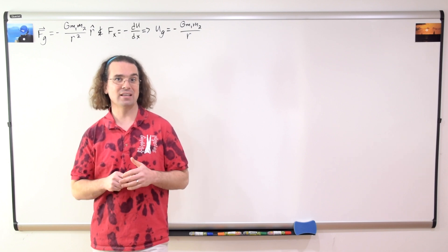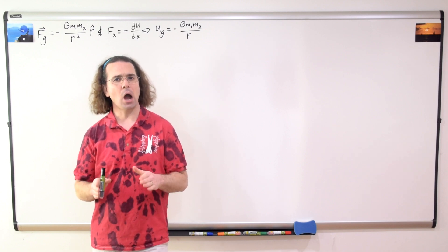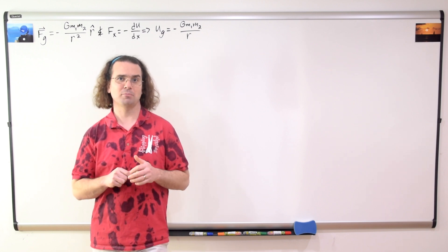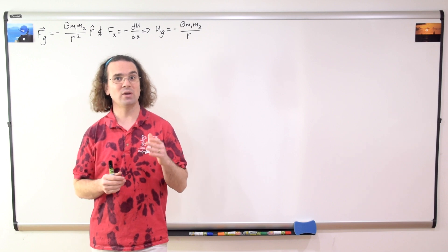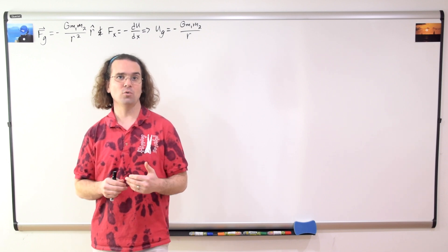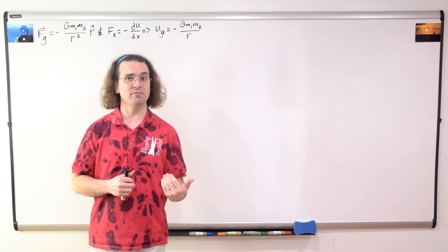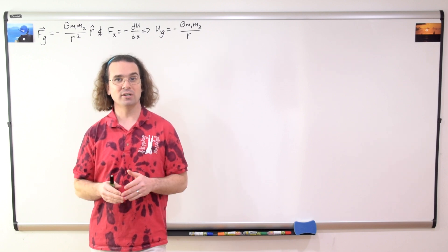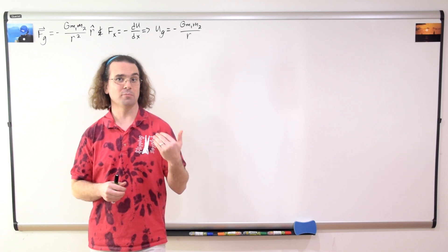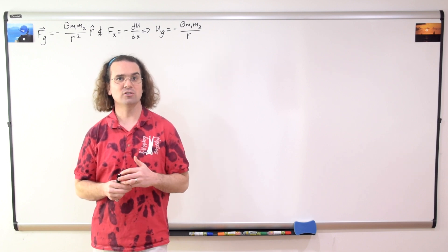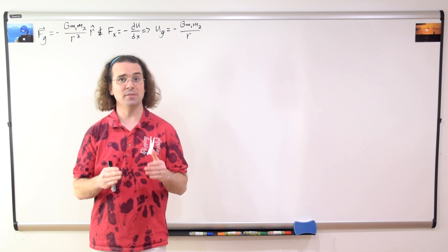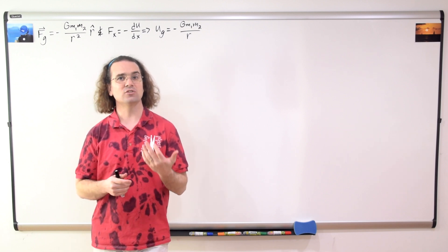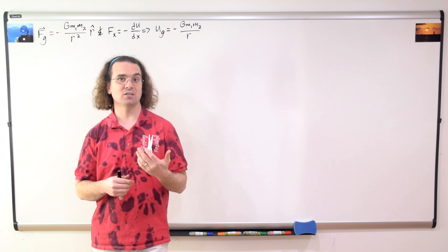We are not going to walk through that derivation again right now. Our goal is to graph the force of gravity and universal gravitational potential energy which exists between an object and a planet, all the way from where the object is in the center of the planet to where the object is infinitely far away. Mass 1 is the object and mass 2 is the planet. Let's start with the functions where the object is on the surface of the planet and beyond — where r is greater than or equal to the radius of the planet.